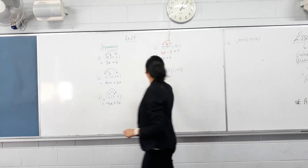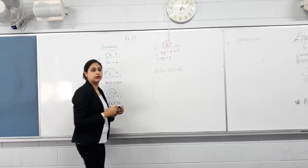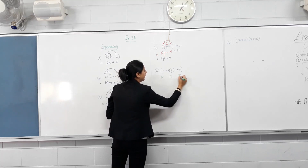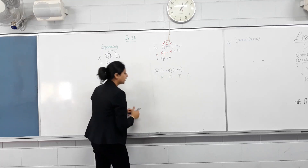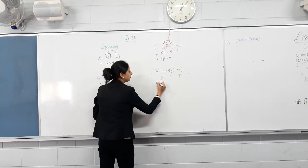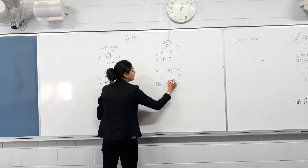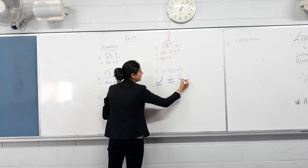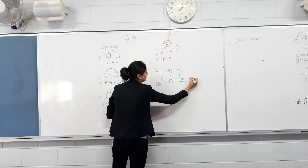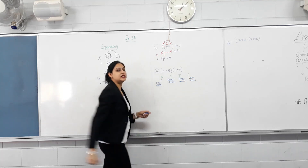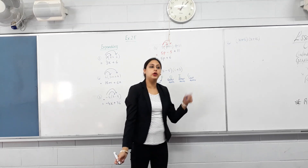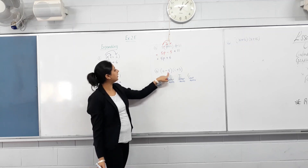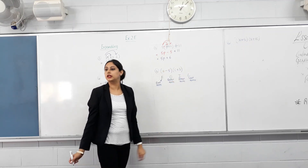Now, the difficult ones. What if we have two brackets? We use a process called FOIL. Have you heard of that before? No. Okay, then you need to pay attention. F means first terms. O stands for outer terms. I stands for inner terms. L stands for last terms. This is an easy way to remember the order in which we're going to multiply. A will first be multiplied with both C and 3, and then negative 5 will be multiplied with both C and 3. That's the process.